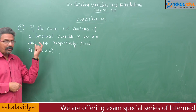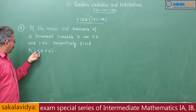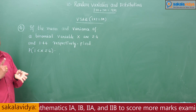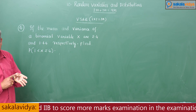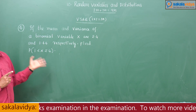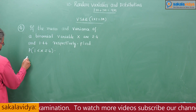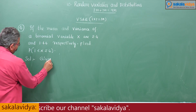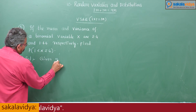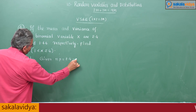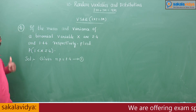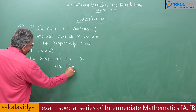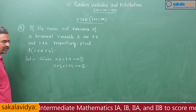What we are asked is P(1 < X ≤ 4), which means P(X=2) + P(X=3) + P(X=4). First, write down the formulas: mean NP = 2.4 (equation 1), and variance NPQ = 1.44 (equation 2).